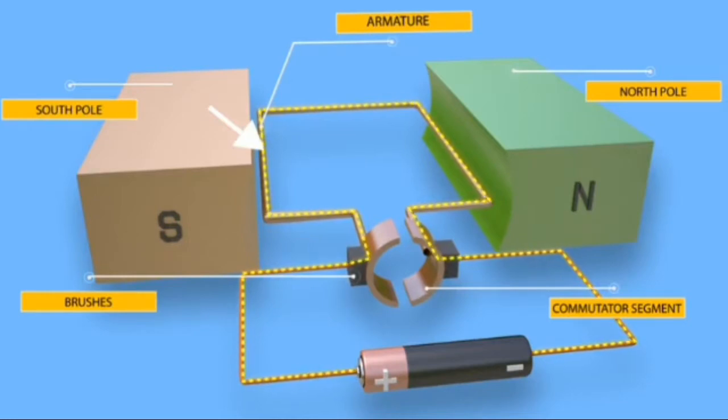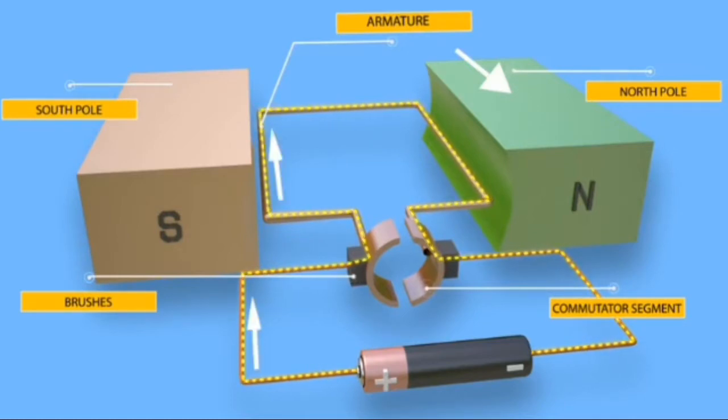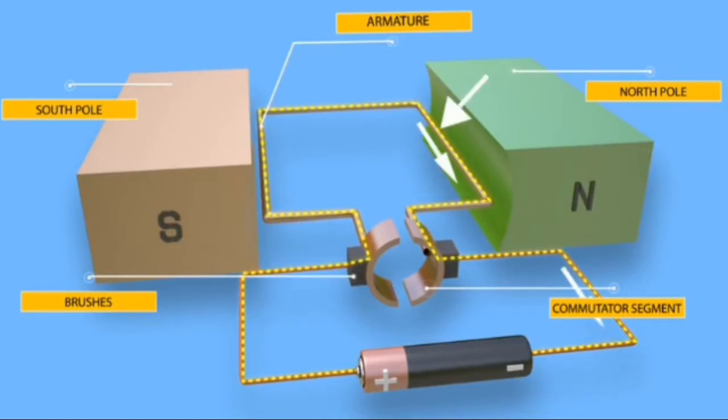As we see, positive terminal of a battery is connected to left conductor of a turn, and negative terminal is connected to right conductor of a turn. As we see in the model, north pole of a magnet is placed near left side, and south pole is placed near right side of the turn. Current in left side flows inward, and current in right side flows outward.